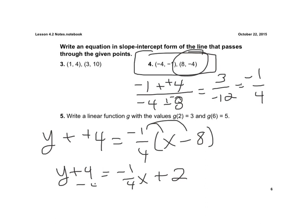Now to solve this, I'm going to subtract 4 from each side, and I get y is equal to negative 1 fourth x minus 2. And there's our final answer.